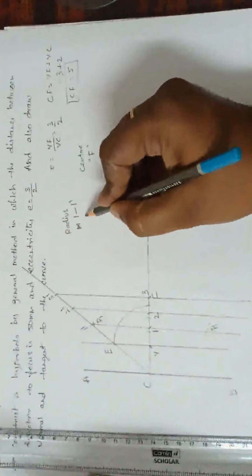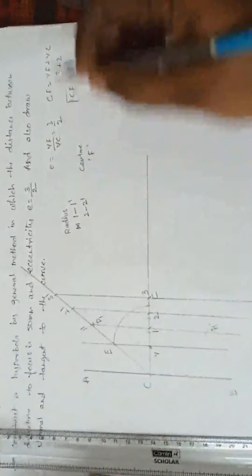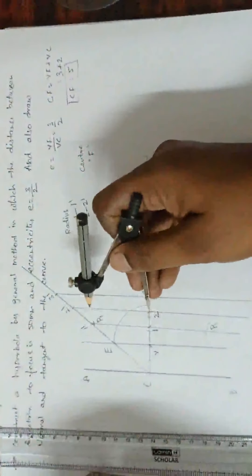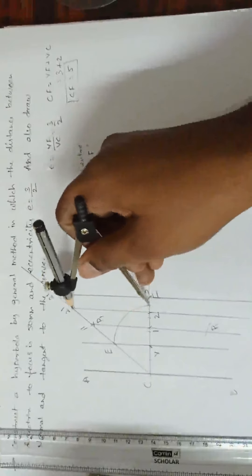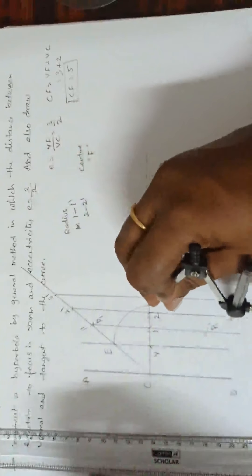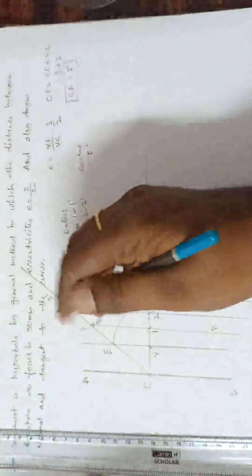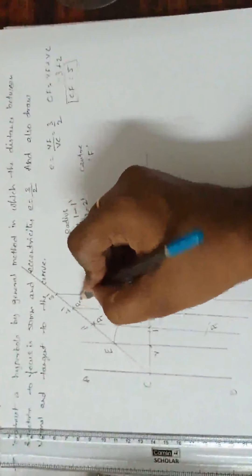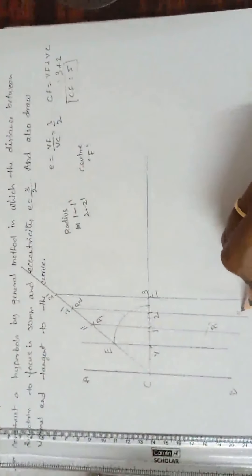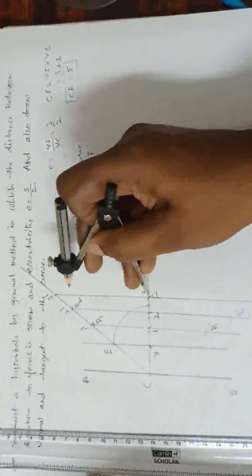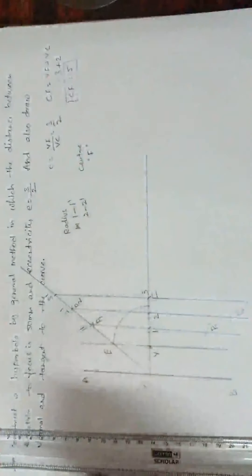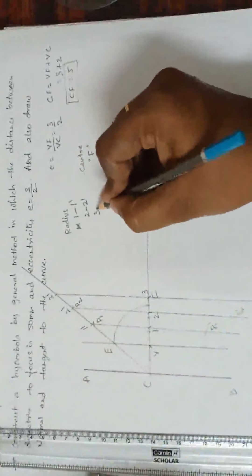Next, take radius 2, 2 dash. Take radius 2, 2 dash. Focus as center. Cut the curve. This is 3, 3 dash. I am writing here. This is 3, 3 dash. The line 3, 3 dash, the distance.